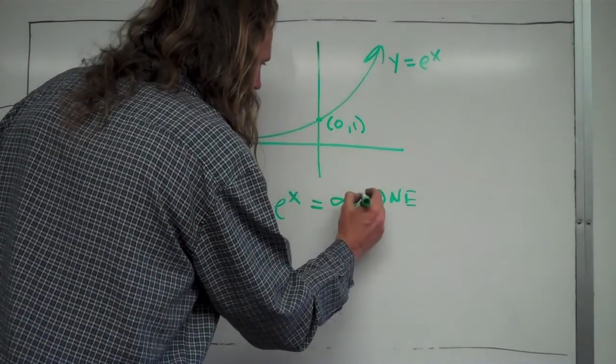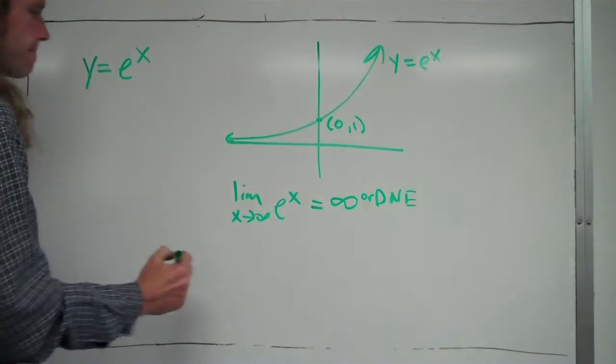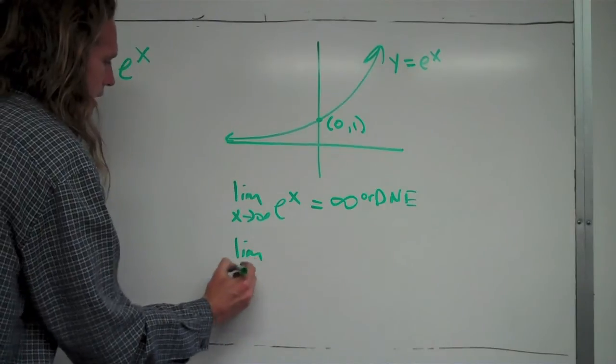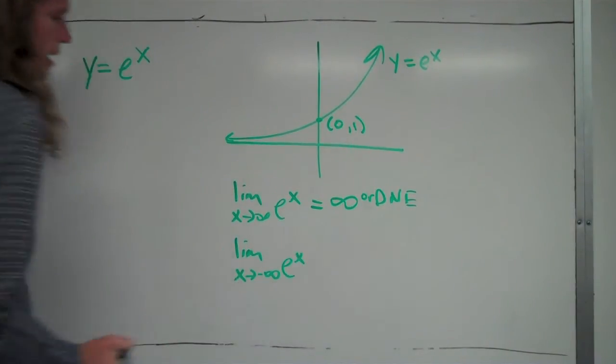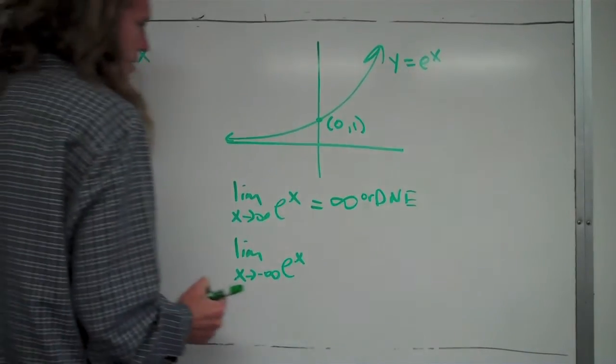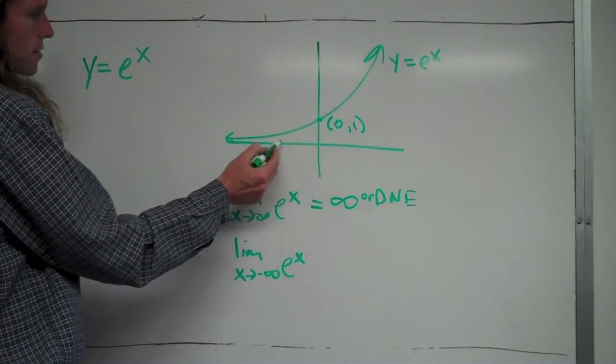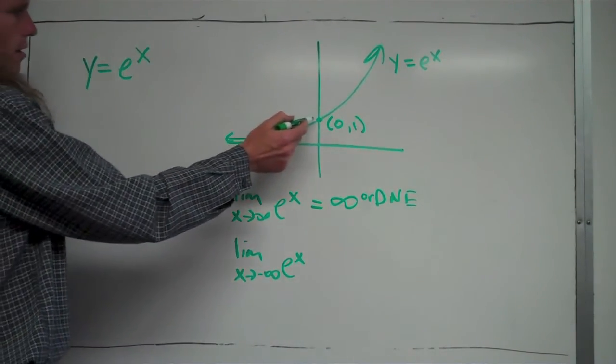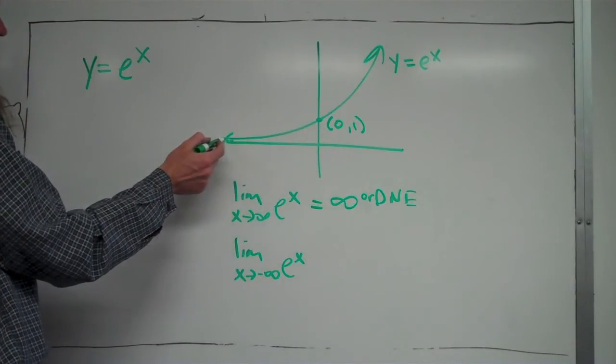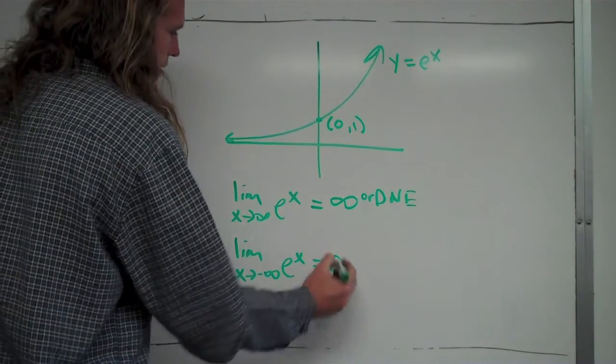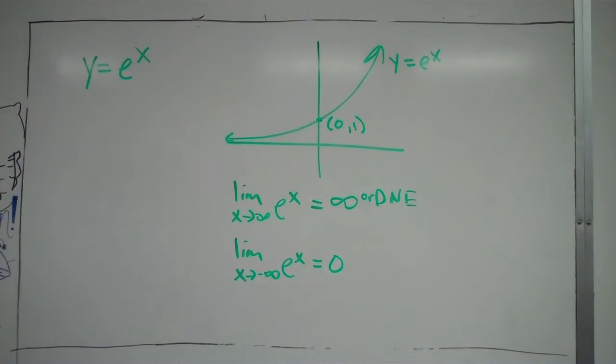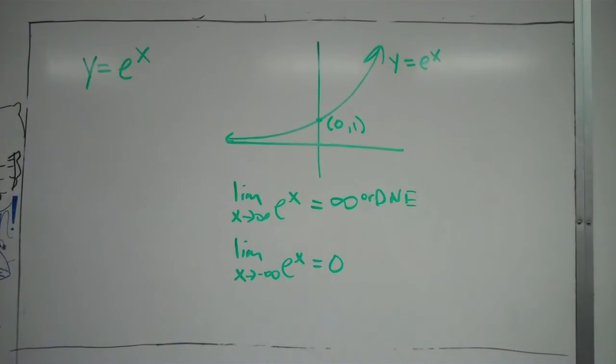That's supposed to say or right there. You could also be asked what's the limit as x approaches negative infinity of e to the x. And in this case, if I look at my graph, as x goes to negative infinity, as x gets smaller and smaller and smaller, the y value gets closer and closer and closer to 0. So, as x goes to negative infinity, that is actually equal to 0. So, just some information about the graph and limits there.